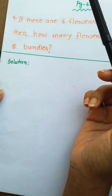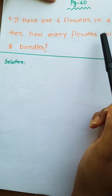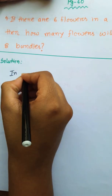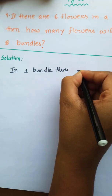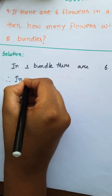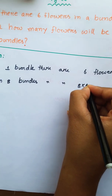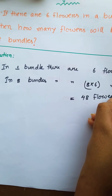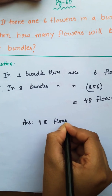The next question is number 4, page number 60. If there are 6 flowers in a bundle, then how many flowers will be in 8 bundles? In 1 bundle there are 6 flowers. Therefore, in 8 bundles there are 6 into 8 flowers, that is 48 flowers. So the answer is 48 flowers.